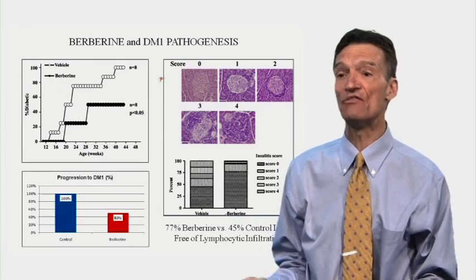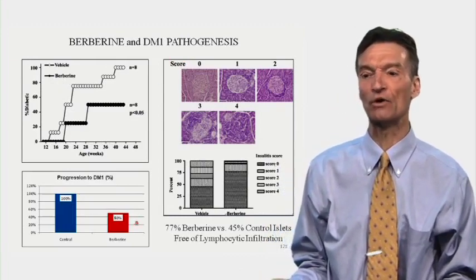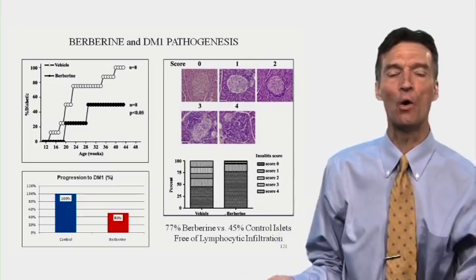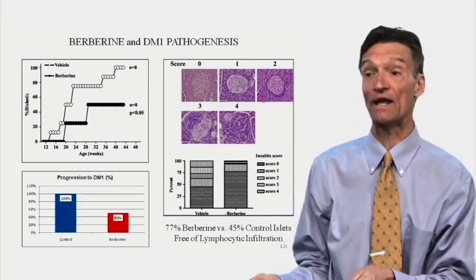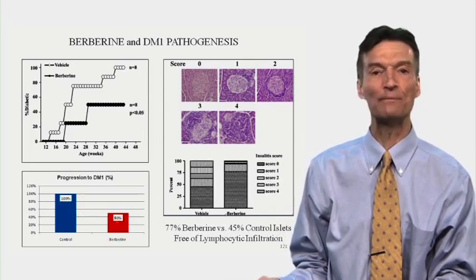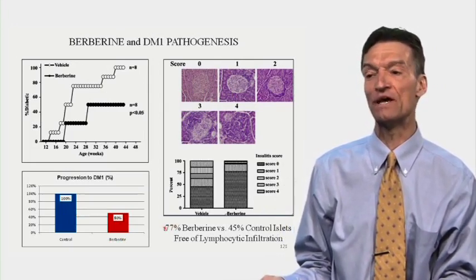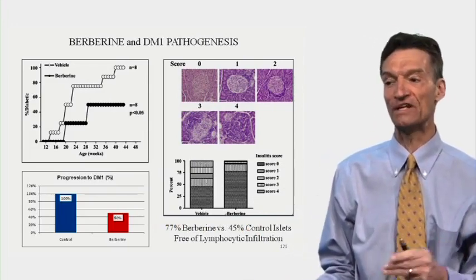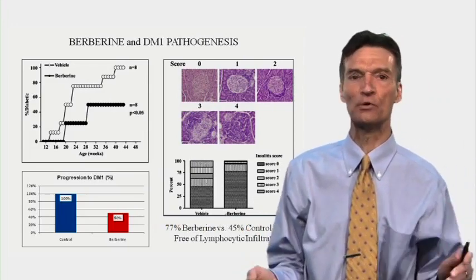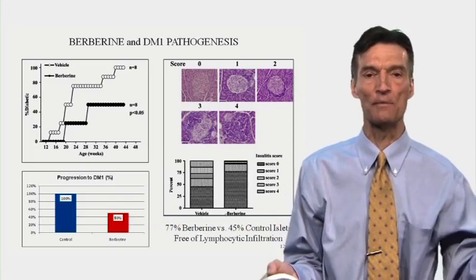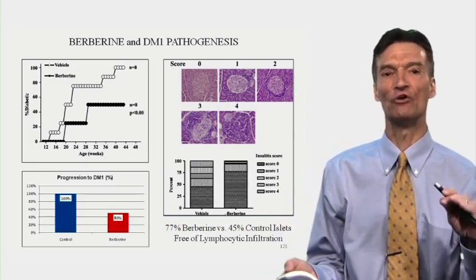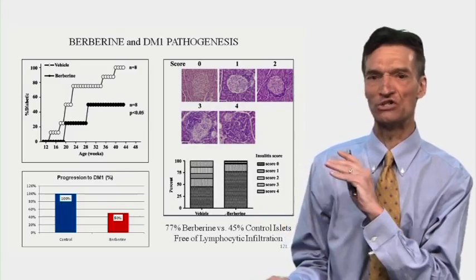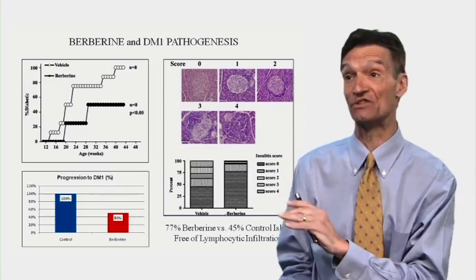Berberine treatment blunted progression of diabetes. All the NOD mice went on to develop diabetes due to ongoing immune attack against the pancreatic islet cells, but there was great protection with berberine. 77% of the berberine versus 45% of the control islets were free of lymphocytic infiltration. Just as berberine was helpful against experimental multiple sclerosis, it was helpful in this animal model of genetic type 1 diabetes, which is inflammatory, Th1/Th17 mediated.